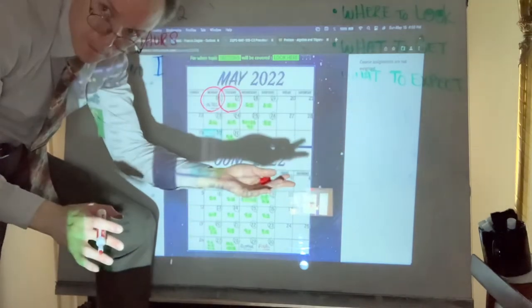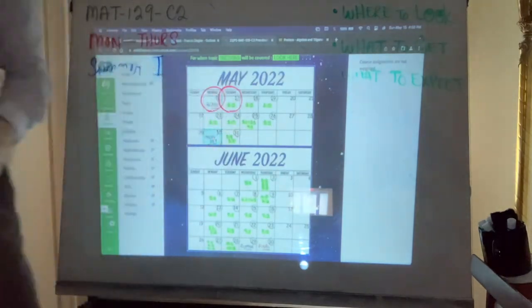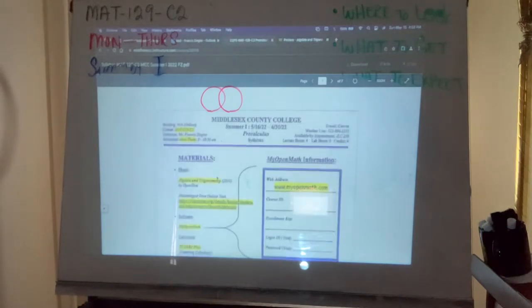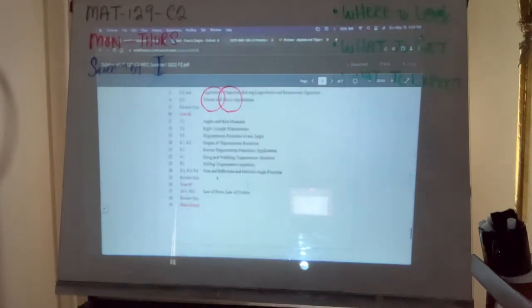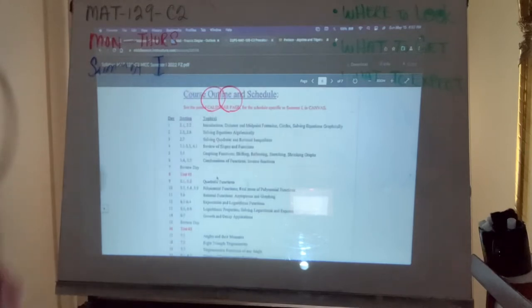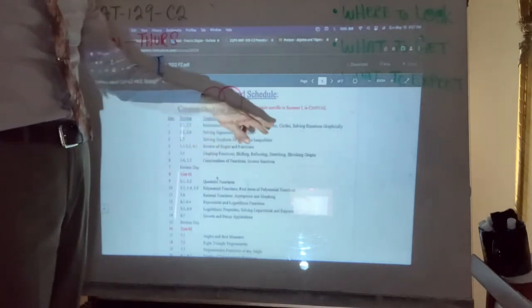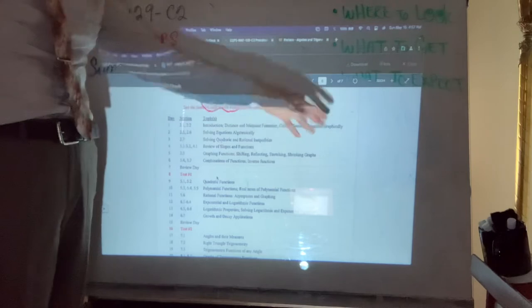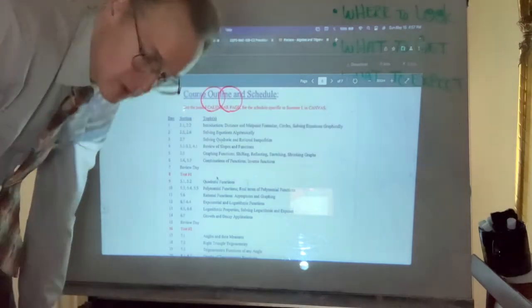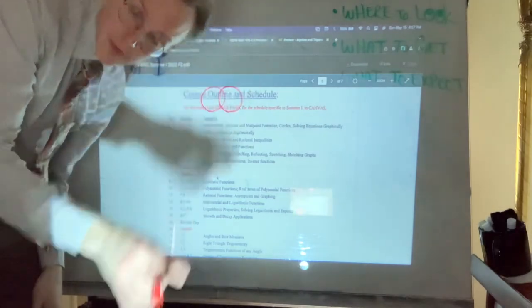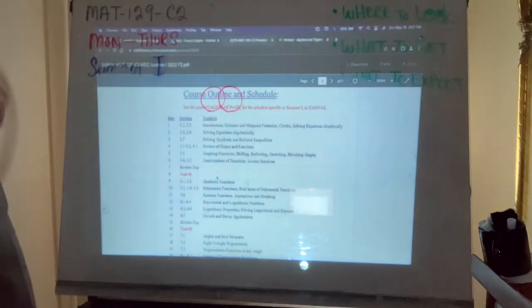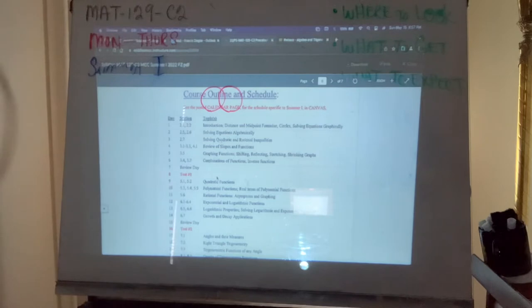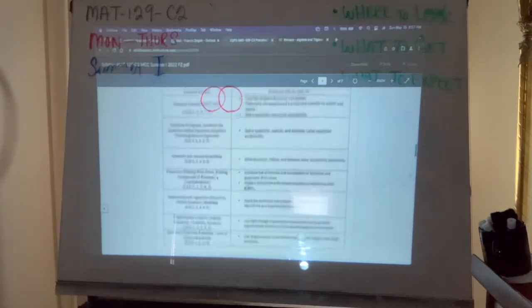If you want to know what the actual numbers correlate to, they're the section numbers that would be in the textbook. You could look in the syllabus if you want to see what the specific title of the topic is. Section 2.1 for us will be the distance, midpoint, and circle formulas, and 2.2 will be solving equations. It's easier to just write the numerical label—2.1, 2.2—on those respective days. This is the whole slew of material by the end of the semester.